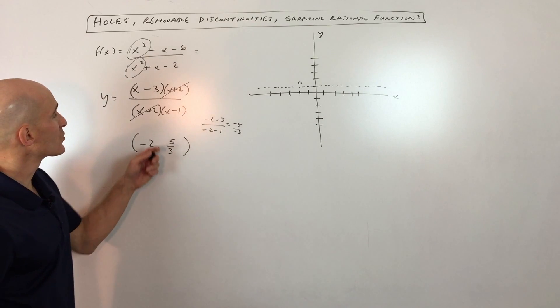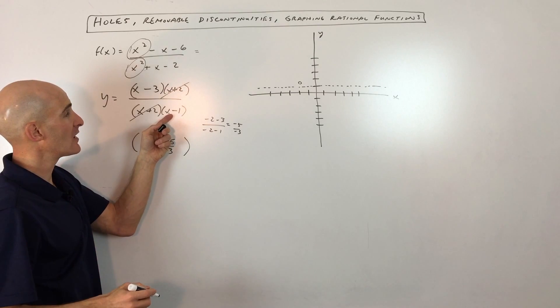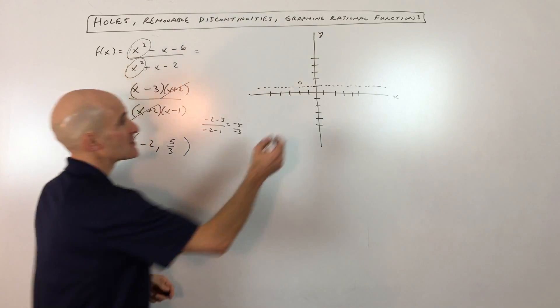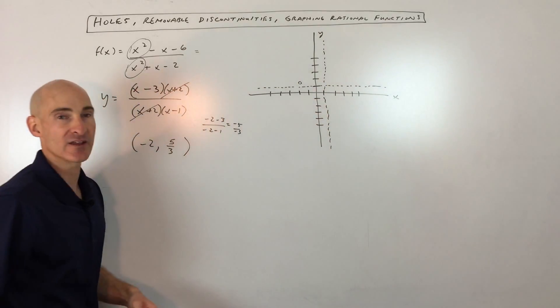So then the next thing is we're going to look at the vertical asymptotes, and we know that we can't divide by 0, so that means x can't equal 1. We're having a vertical asymptote at x equals 1, which is right here. So I'm going to draw that in. That's just a dotted invisible line.